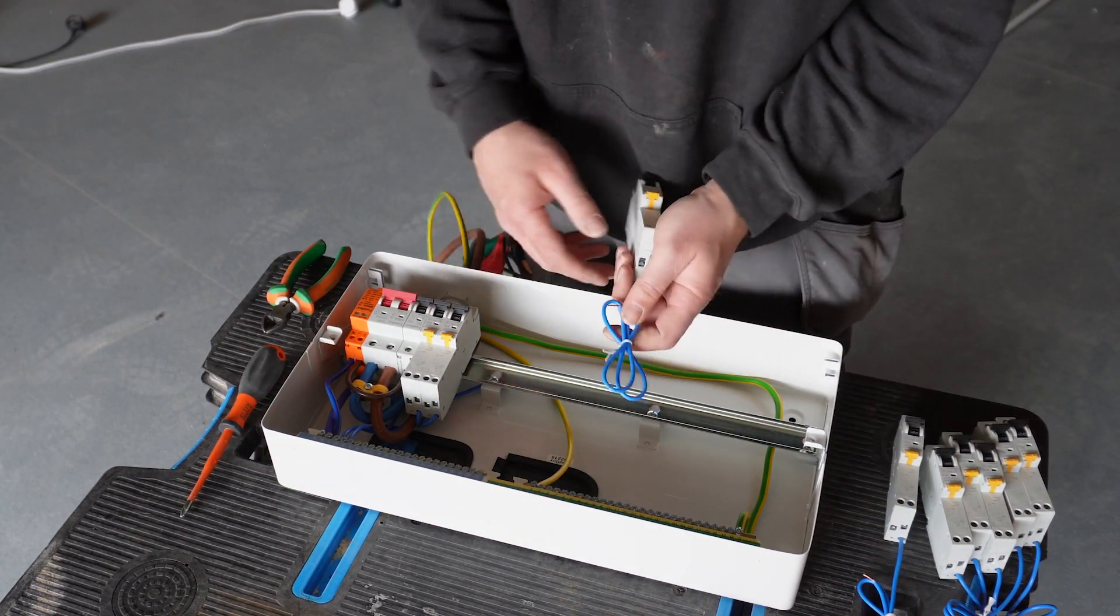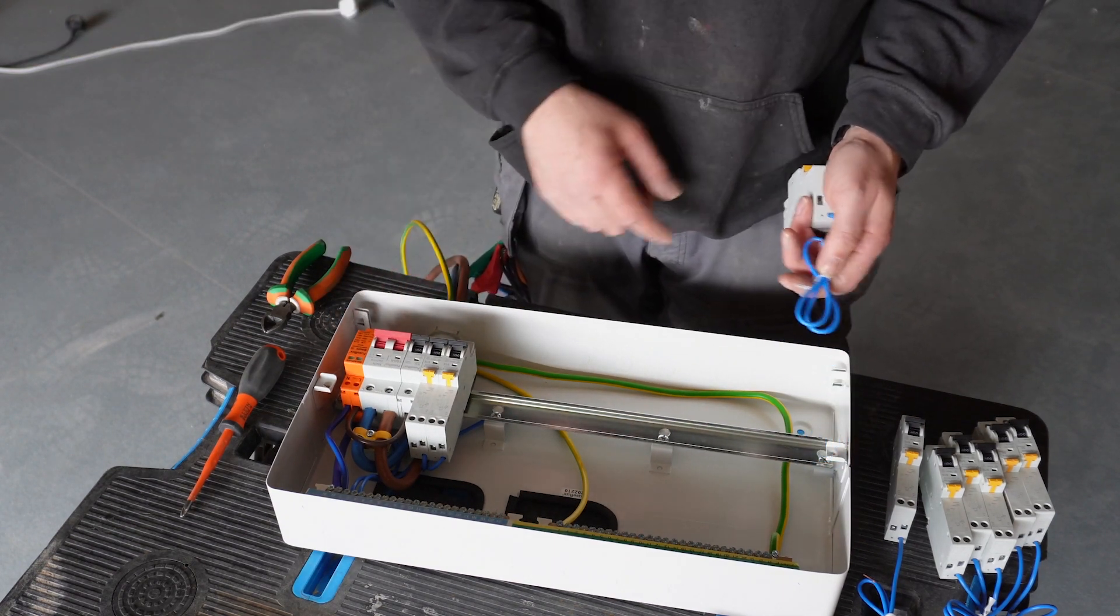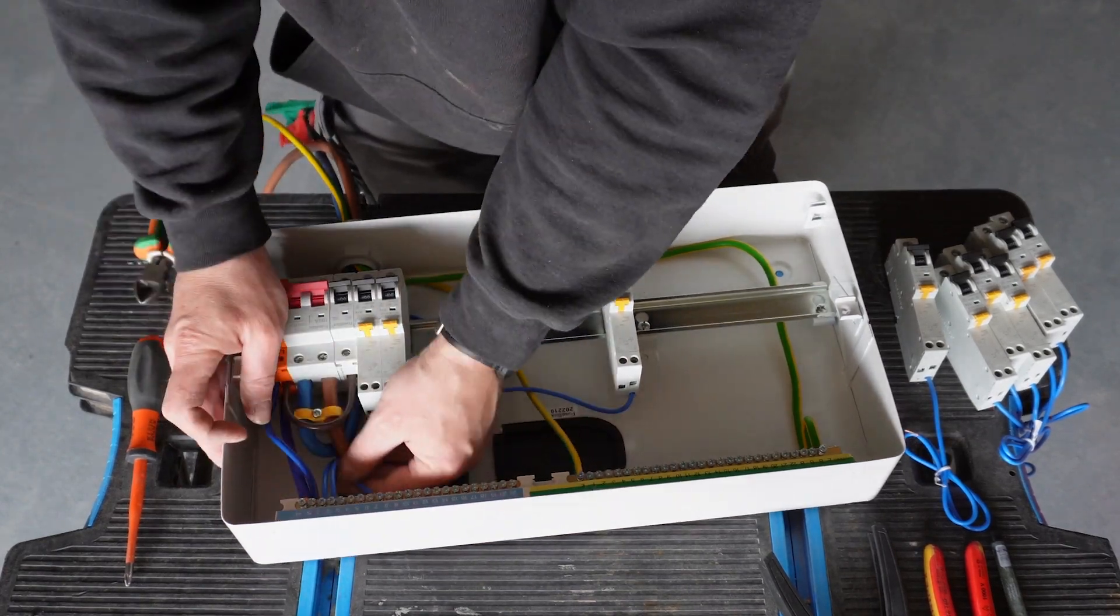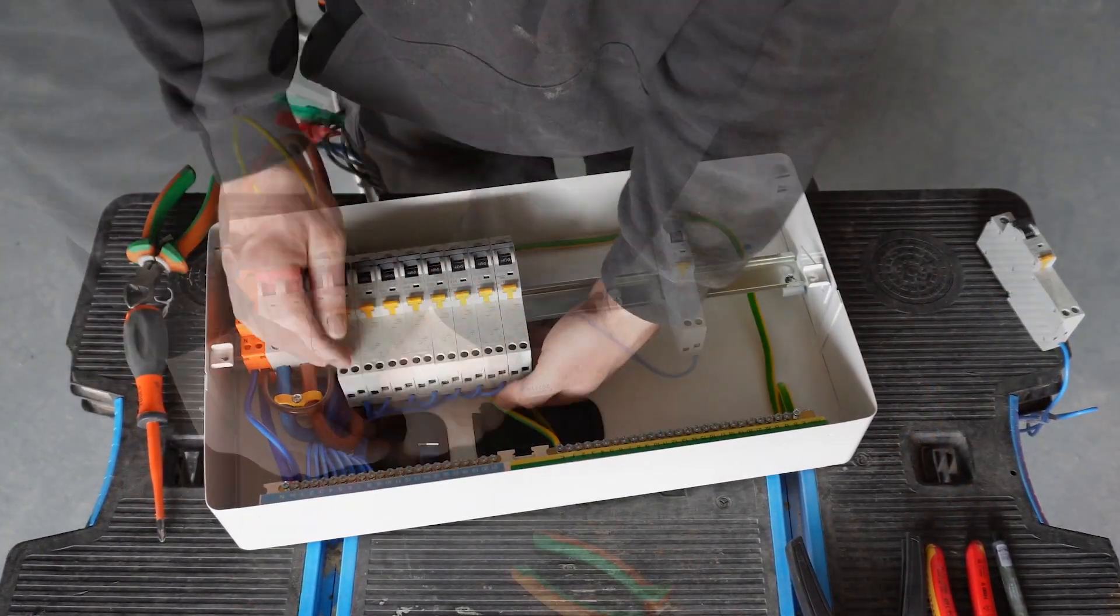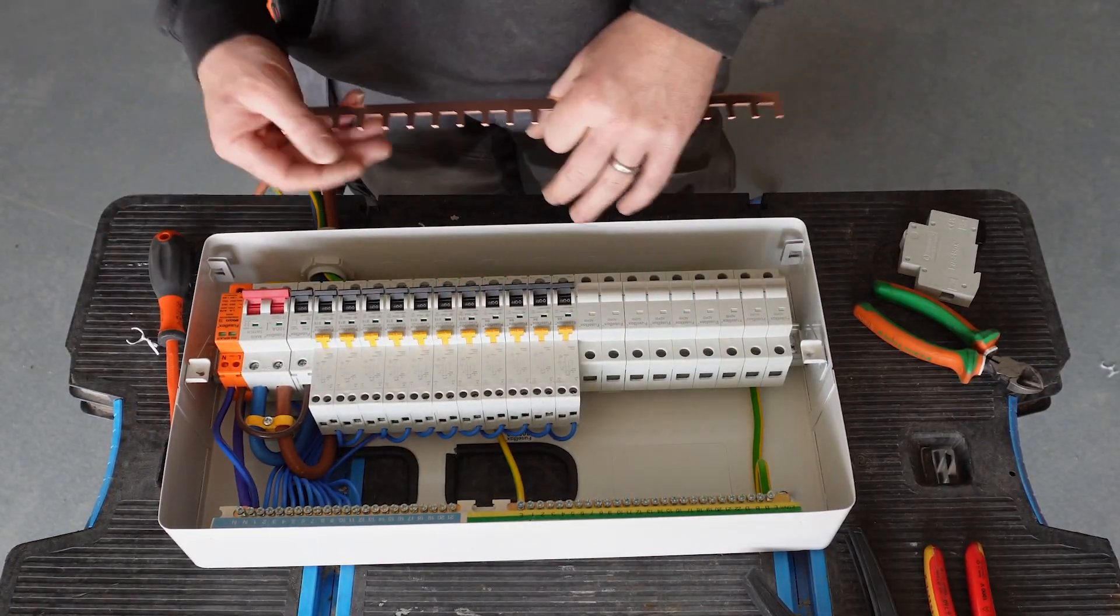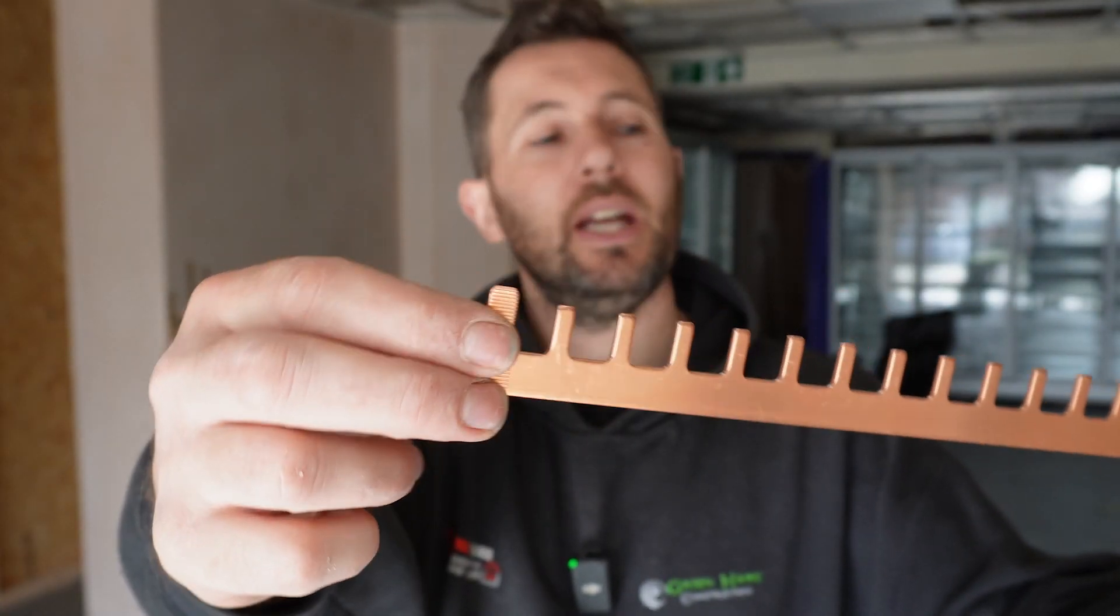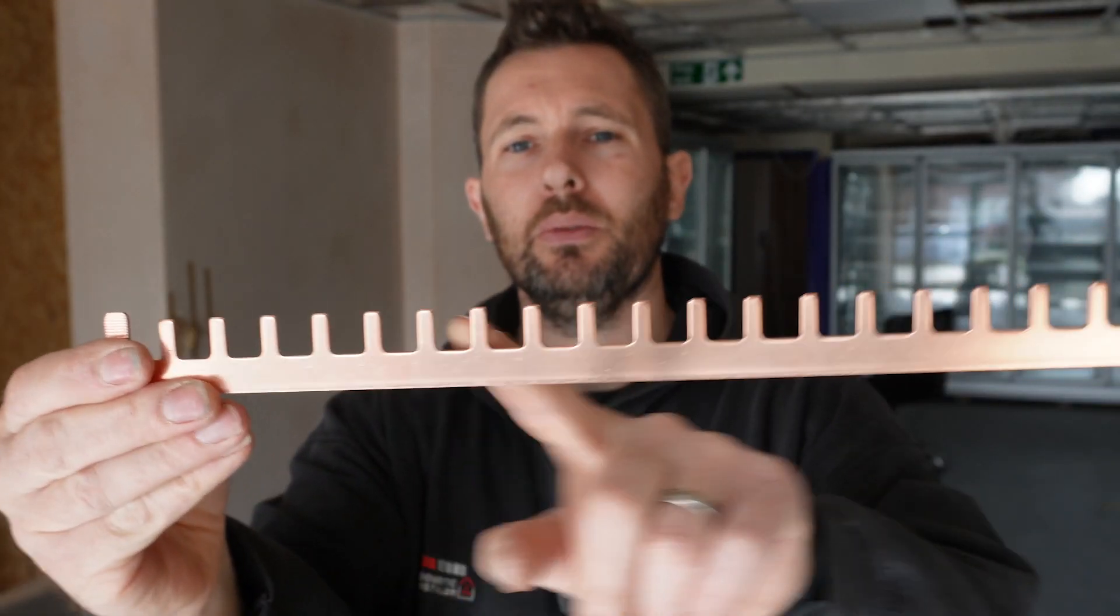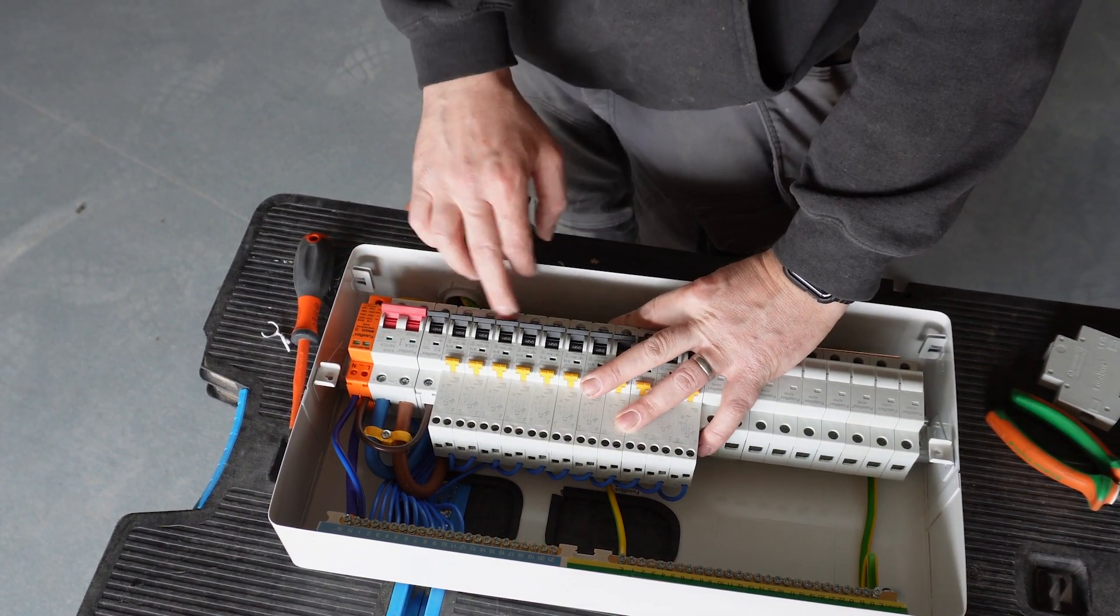Then basically you just keep working until you've got them all loaded up and then you can get your buzz bar on. The RCBOs are all in. For the buzz bar, we've actually got a larger end, and then all the rest are exactly the same. The larger end goes in, as you can imagine, onto the main switch.